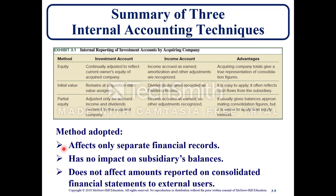Here's a summary of the three internal accounting techniques — the method, the investment account, the income account, and the advantages. For the equity method: the investment account is continually adjusted to reflect the current owner's equity of the acquired company; income is accrued as earned; amortization and other adjustments are recognized; and the acquiring company total gives a true representation of consolidation figures. Initial value remains at the acquisition date value assigned; dividends declared are recorded as dividend income; it is easier to apply and often reflects cash flows from the subsidiary. Partial equity is adjusted only for accrual income and dividends declared by the acquired company; income is accrued as earned with no other adjustments; it usually gives balances approximating consolidation figures but is easier to apply than the equity method.